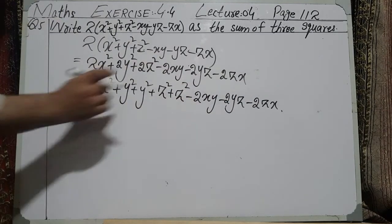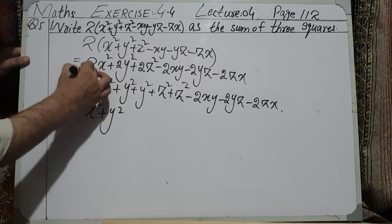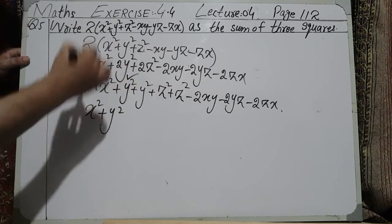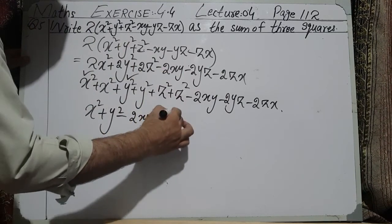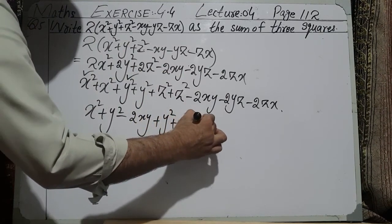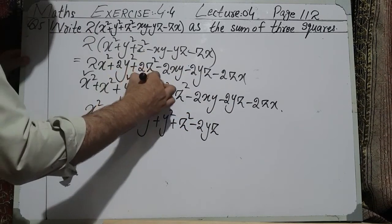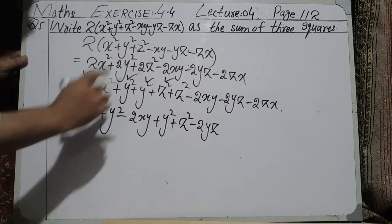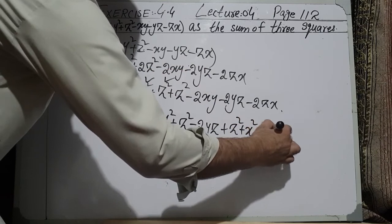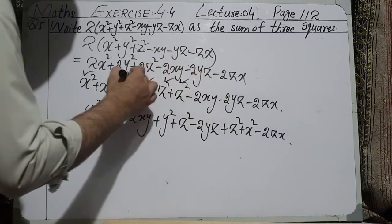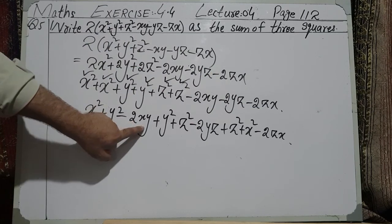Now I group the terms: I take x² + y² together with -2xy (ticking those terms). Then I write y² + z² together with -2yz. Then I write z² + x² together with -2zx.